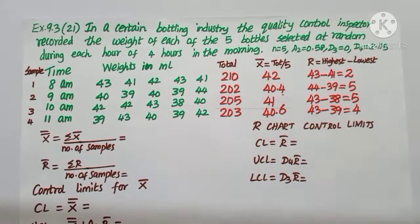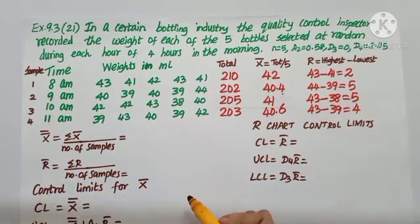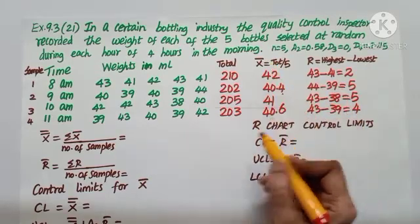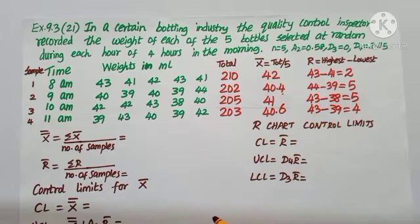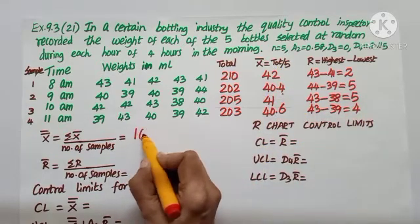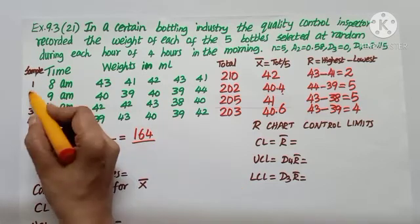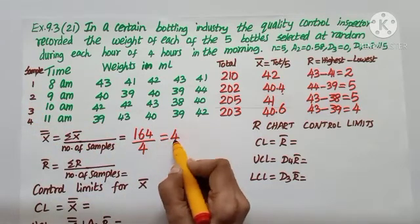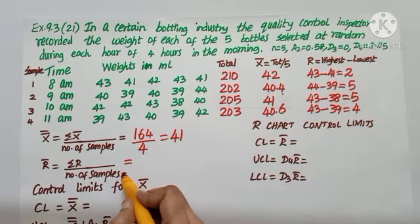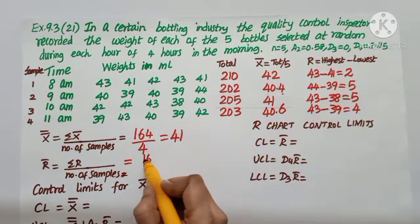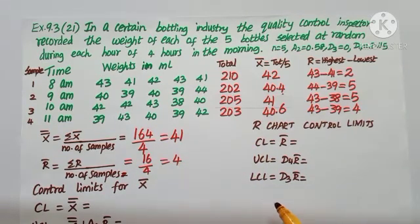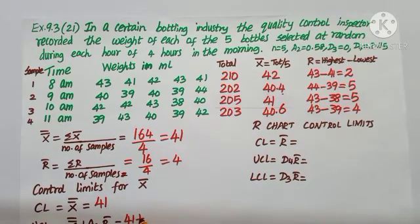Now we have x-bar and r for each sample. Proceeding in the usual way: x-double-bar equals the sum of all x-bar values divided by the number of samples. Adding all x-bar values gives 164, divided by 4 samples, giving x-double-bar equals 41. R-bar equals total of all ranges — which is 16 — divided by 4, giving r-bar equals 4. For x-bar chart: CL equals x-double-bar, which is 41. UCL equals 41 plus A2 (0.58) into r-bar (4).